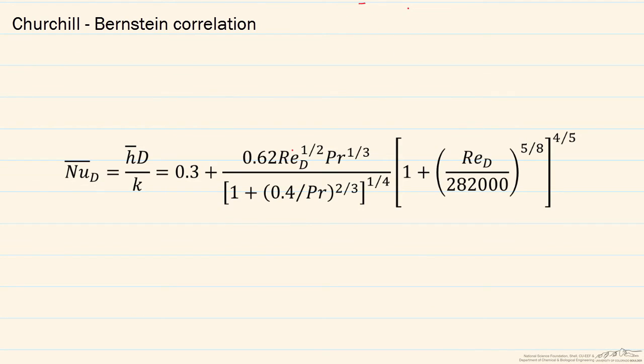Finally, we have what's known as the Churchill-Bernstein correlation, and as you can see, this is the most complex of all of them. And here, we have a correlation that's based on the Reynolds number, as well as on the Prandtl number. A number of people consider this to be the most accurate of the three. Certainly, the second and third ones are better because they're based on more recent results.